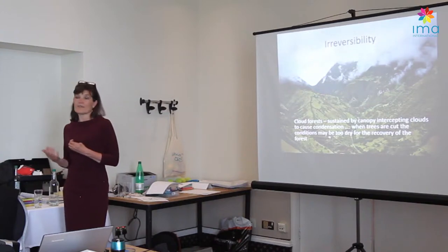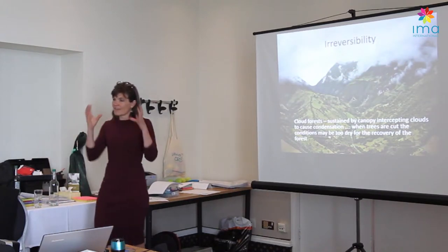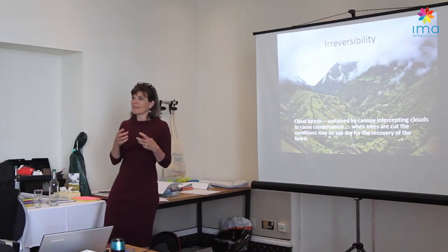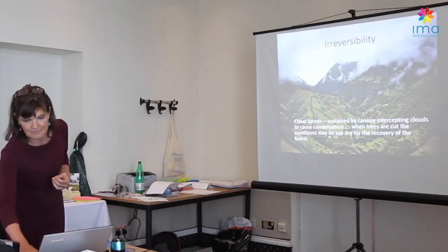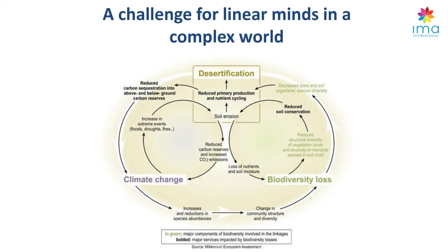Cloud forests are sustained by their own moisture — they intercept clouds and create their own microclimate. Once that forest is taken away there may not be enough moisture for it to regrow even if deforestation pressure is removed. Research now suggests the Amazon rainforest is actually creating the rain rather than being caused by it, so if the forest is removed a dry climate comes in its place. This is a real challenge for us: we have linear minds. All our big challenges — climate change, biodiversity loss, desertification — are linked through reinforcing feedback cycles, but we deal with things in silos when actually they're all connected.